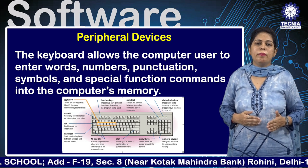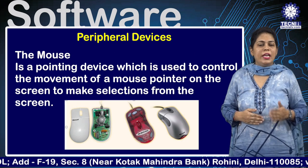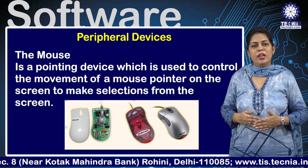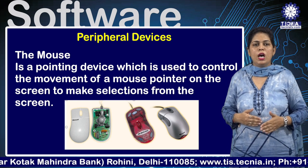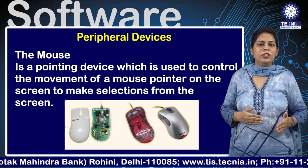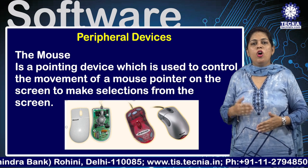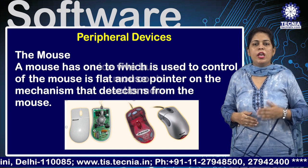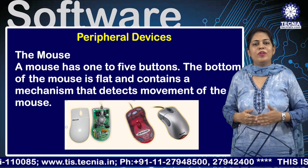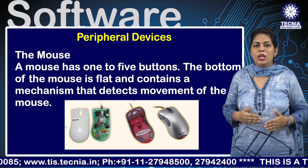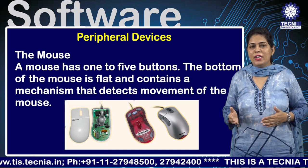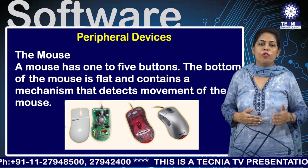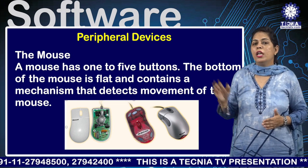The mouse is a pointing device used to control the movement of a mouse pointer on the screen and to make selections. A mouse has one to five buttons. The bottom of the mouse is flat and contains a mechanism that detects movement, as shown in the diagram.